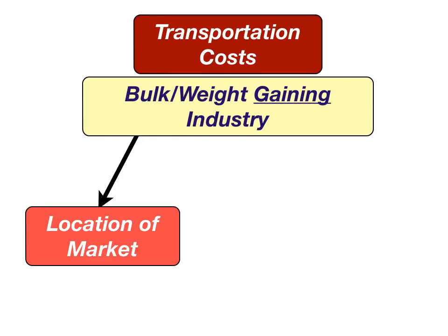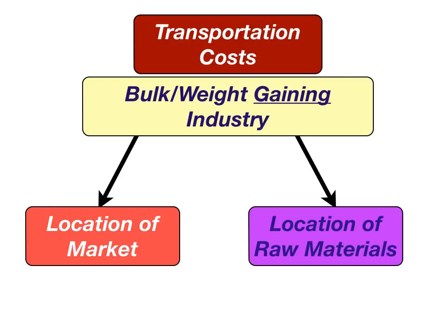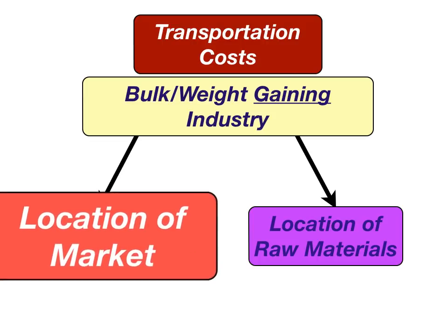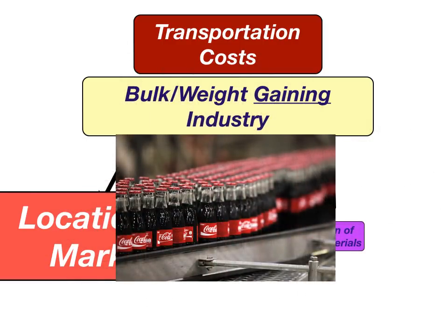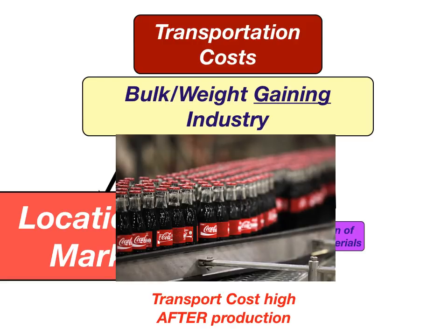Looking at a weight gaining industry, the location of the market is of utmost importance. An example is Coca-Cola, which has high transportation costs after production. Therefore, they locate Coca-Cola plants all over the world instead of exporting from the United States. In Mexico, they have their own Coca-Cola bottling, which is very popular in the United States because they use raw cane sugar as opposed to corn syrup as American Coke does.